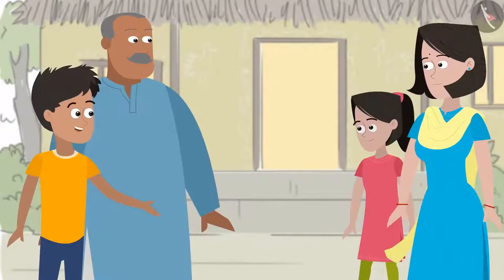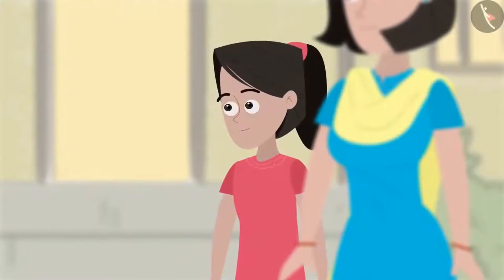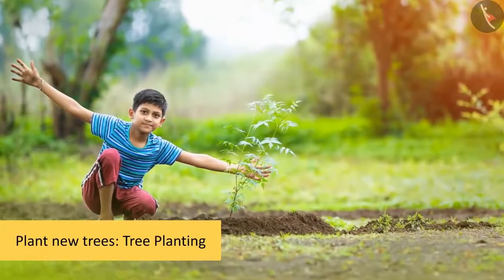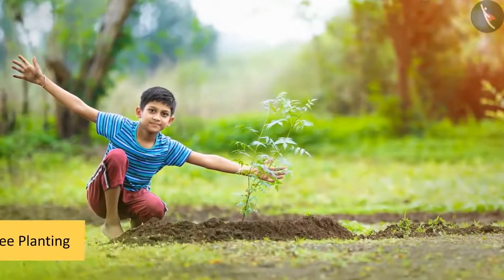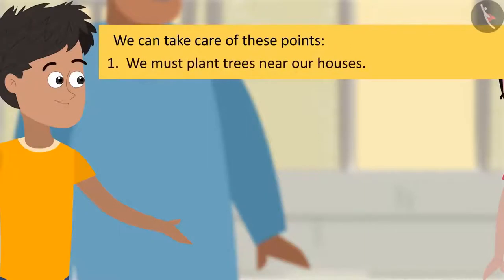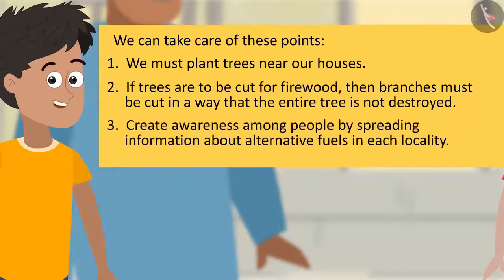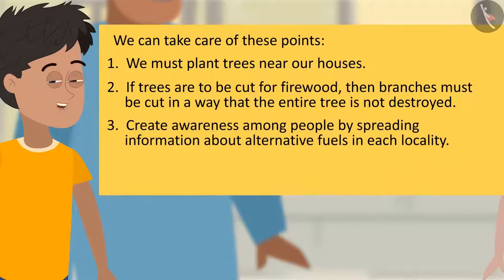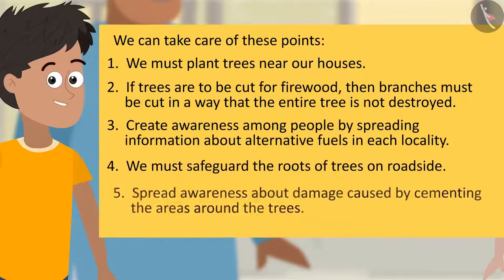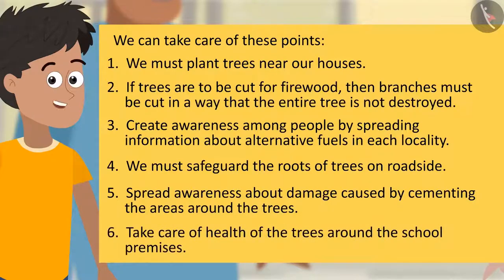But Sanya, we cannot save trees by doing just this — people will still cut trees for other things. There can be only one solution to this problem: we must plant more trees. We must plant trees near our houses. If trees are to be cut for firewood, then branches must be cut in a way that the entire tree is not destroyed. Create awareness about alternative fuels, safeguard roots of roadside trees, spread awareness about damage caused by cementing areas around trees, and take care of trees around school premises.